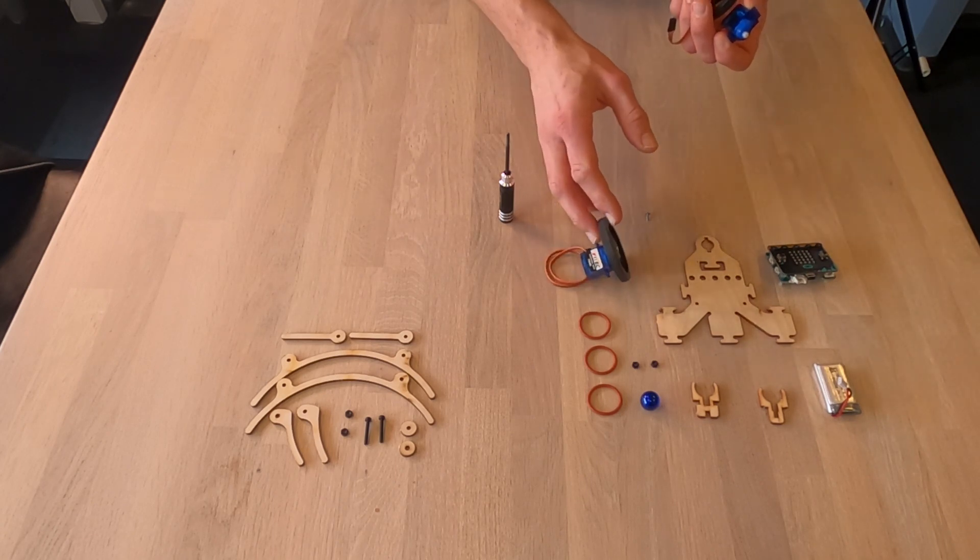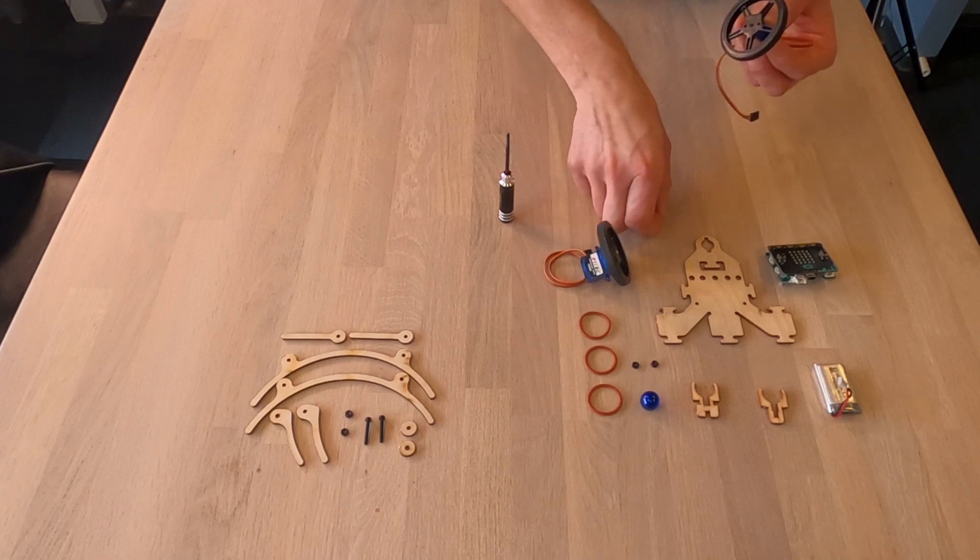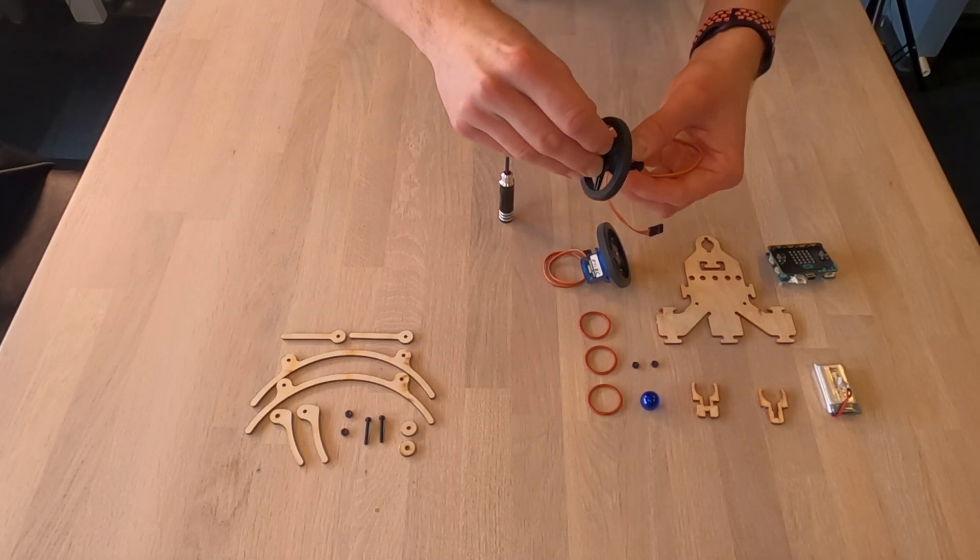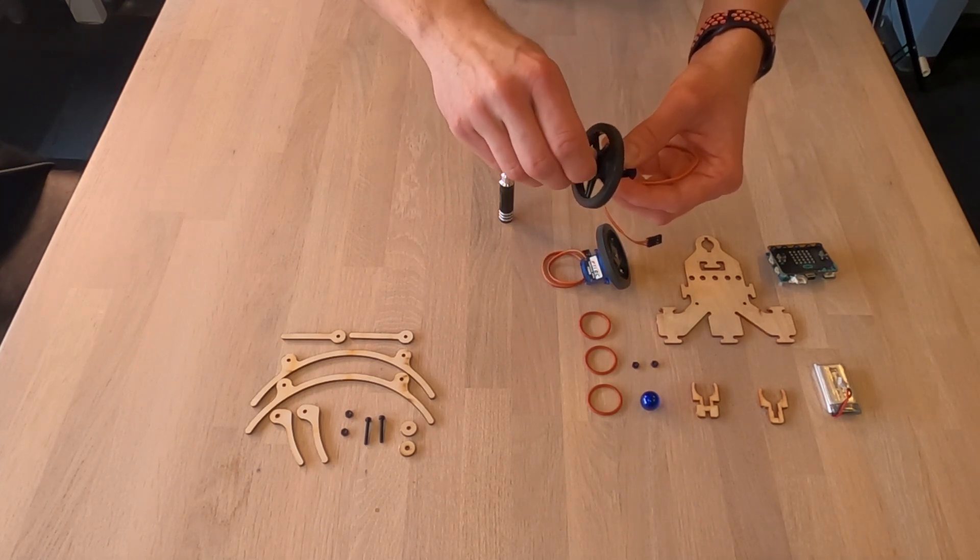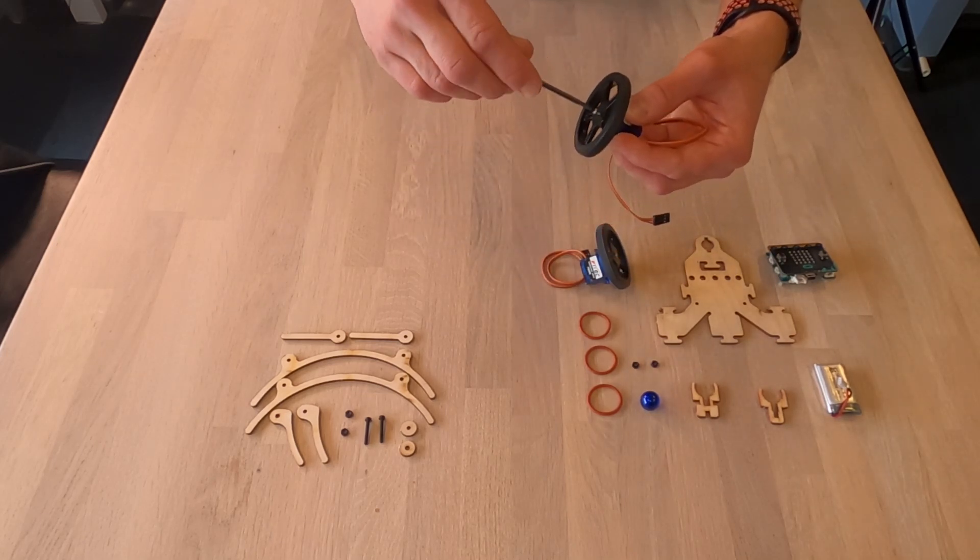Now this is already mounted, so what I do is put the wheel on, make sure that it's firmly placed here, don't turn it too much. Then I have this little screw here, place this inside here. And then start turning.